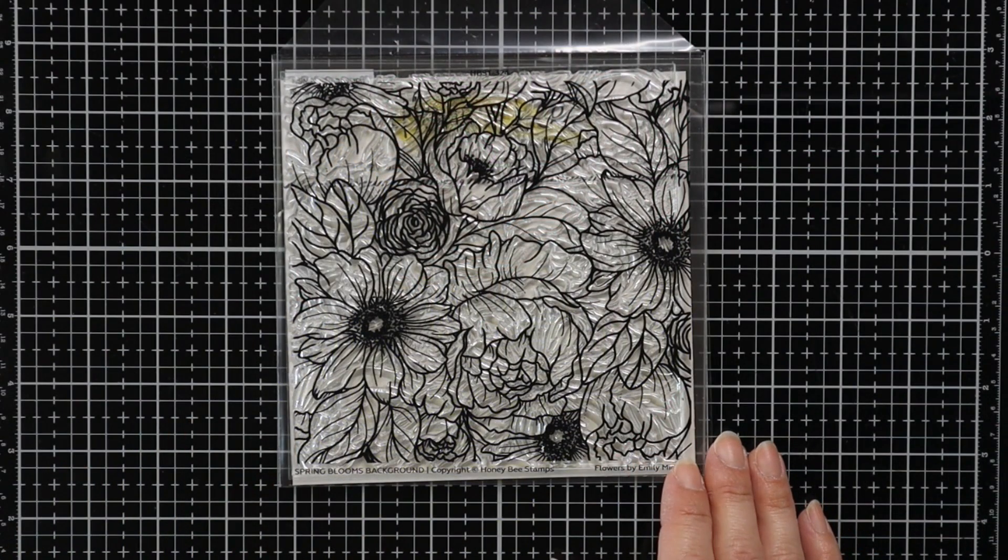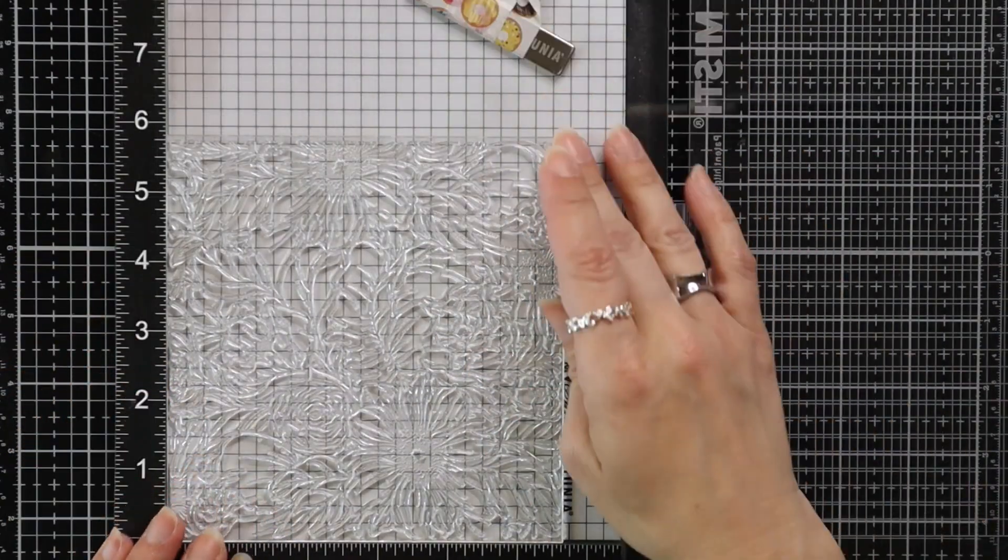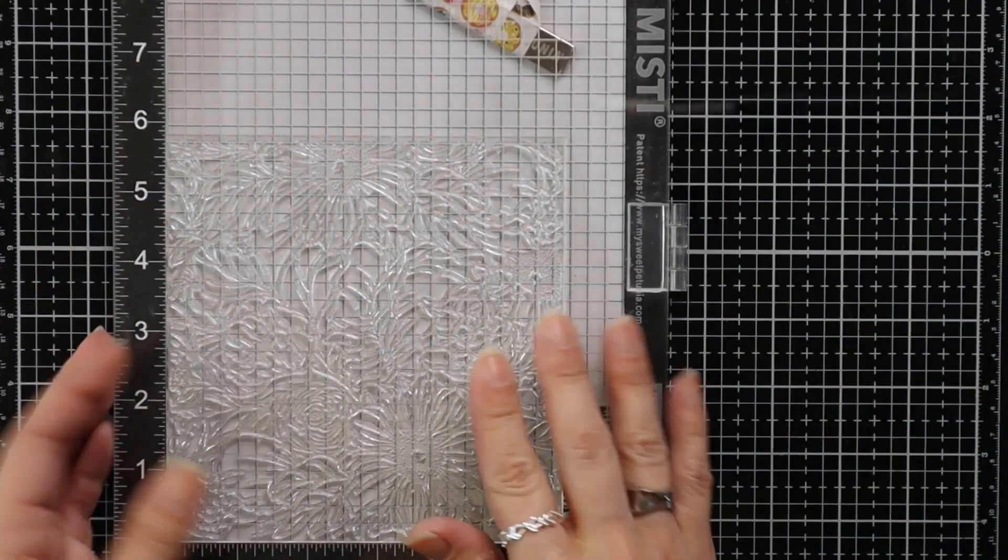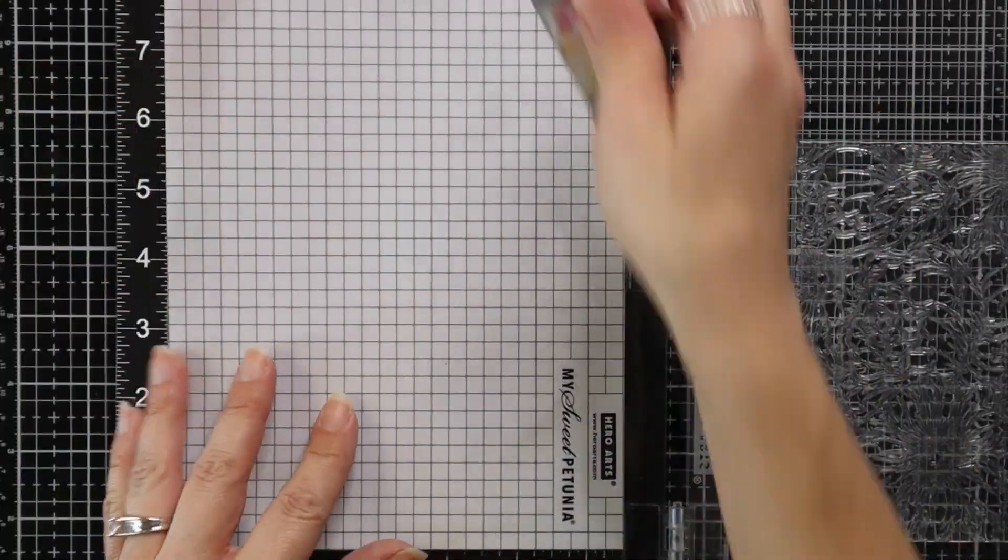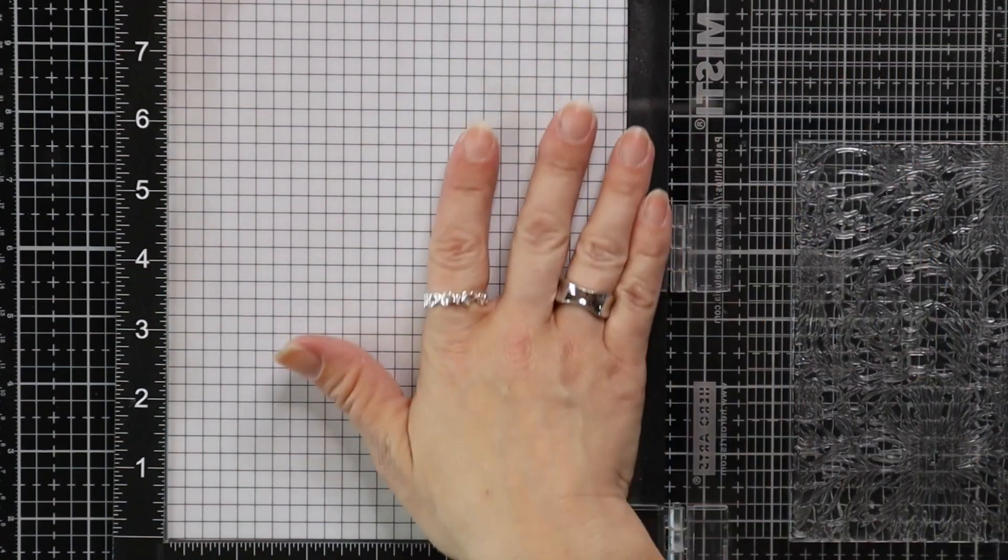First I'm going to start with some background stamping. So I am using this large stamp set. This is the Spring Blooms stamp from Honey Bee Stamps and I'm just loading this into my Misti tool.